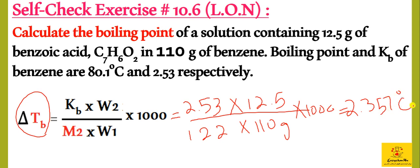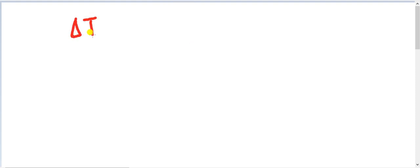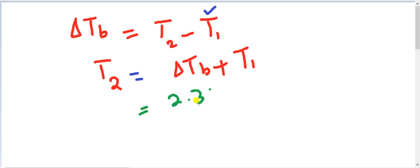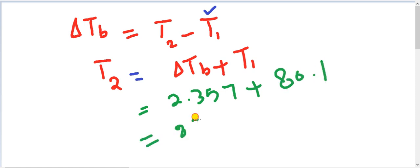Now we have Del Tb found out, and now we will calculate the boiling point of the solution. Boiling point elevation is equal to T2 minus T1, where T1 is the solvent boiling point. We have to find T2, which equals Del Tb plus T1. Del Tb is 2.357 and benzene boiling point is 80.1, so the answer is 82.457 degrees centigrade.